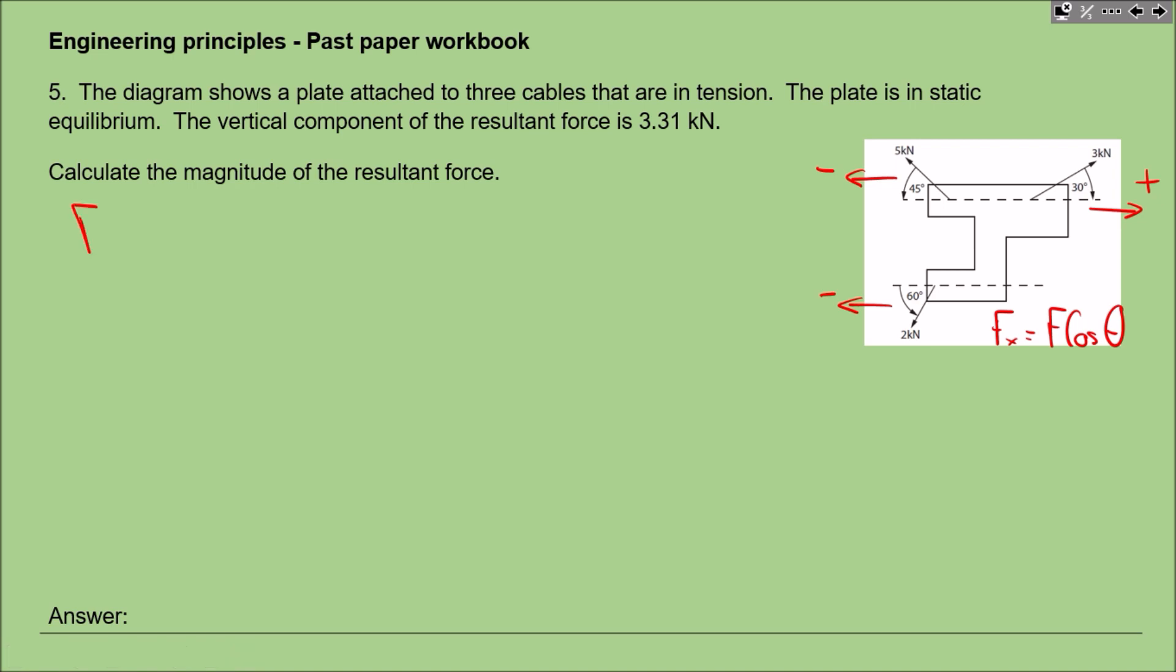We're going to take 3 cos 30°, which is positive. You don't need to write that in, but you can if it makes it easier to comprehend. This is just me working my way through—you might come up with a slightly different approach. Only through practice will you become good at this. Next, we take 5 cos 45°, and that's a minus because it's coming in the opposite direction. Then we're going to minus 2 cos 60°.